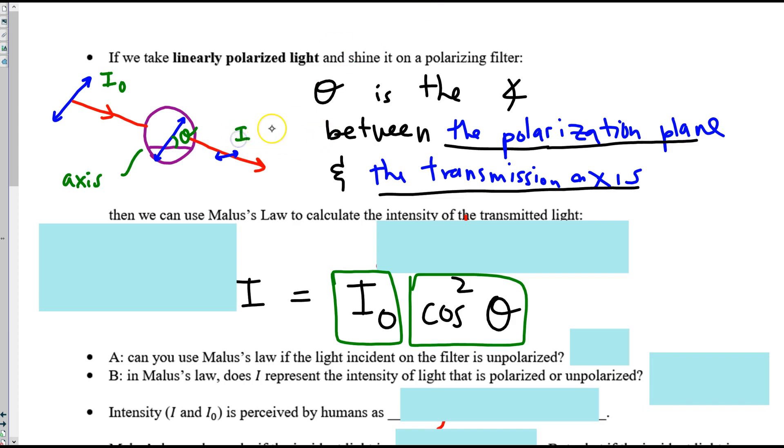And that gives us the intensity on the other side. I with no subscript. So these oscillations are less intense because some light got filtered. So I represents the transmitted intensity. I₀ represents the incident intensity of the light striking or incident upon the filter.